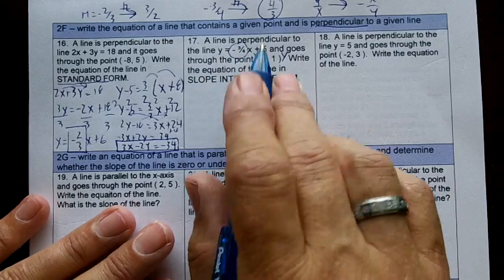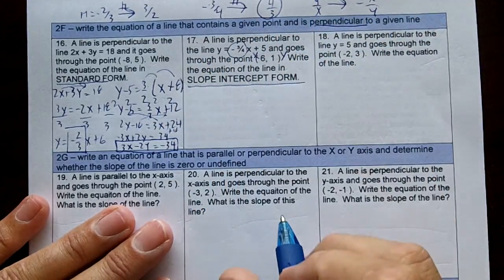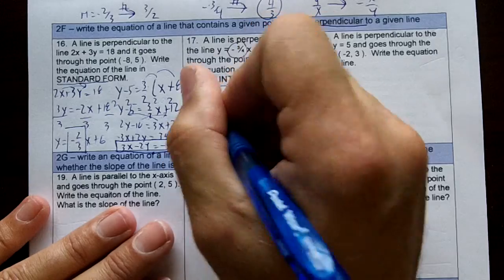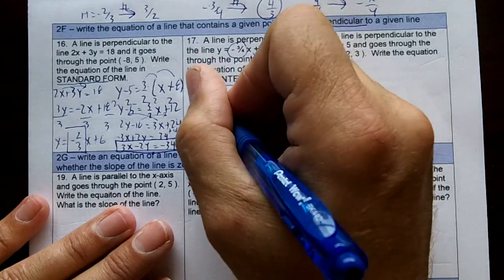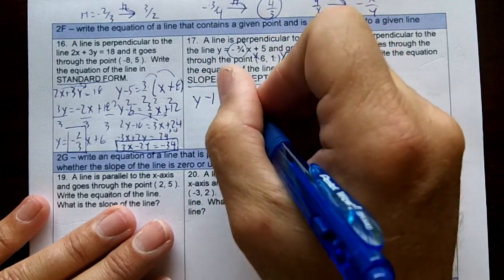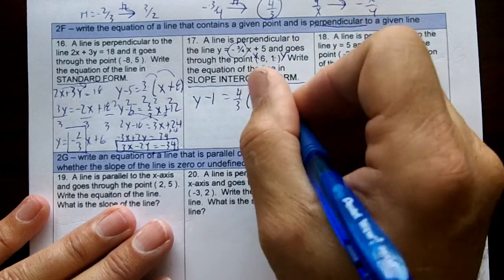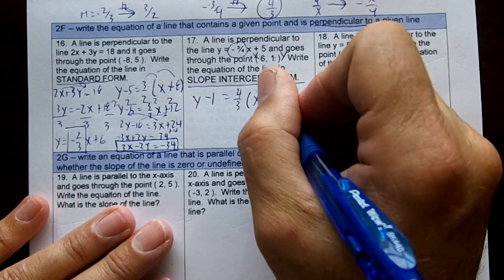And I know the point, so I'm going to plug it in point form, and we want slope intercept form. So y is 1, so y minus 1 equals 4 over 3, parentheses, x, and then this is going to be minus 6.